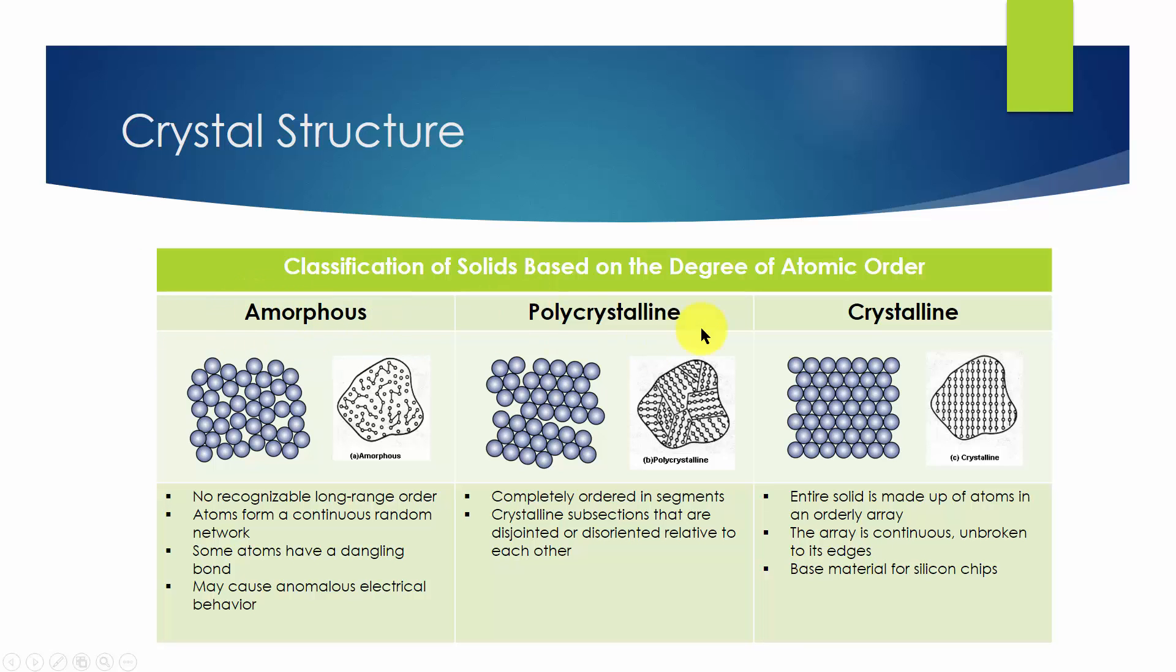amorphous, polycrystalline, and crystalline. In an amorphous solid, there is no recognizable long-range order in the positioning of atoms. An amorphous solid does not have a well-defined structure. It is formless. The atoms form a continuous random network.